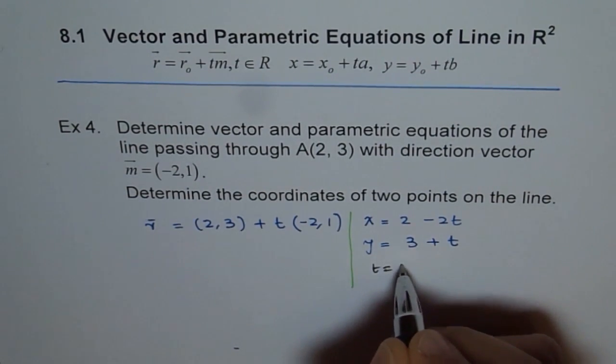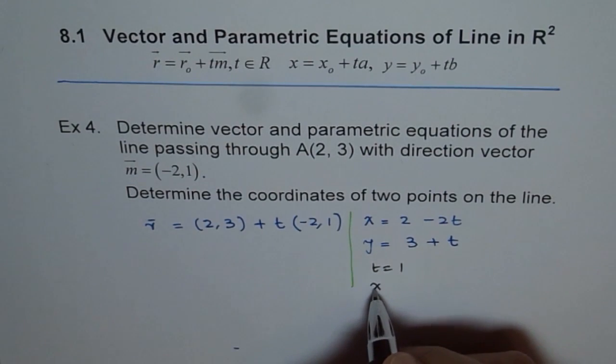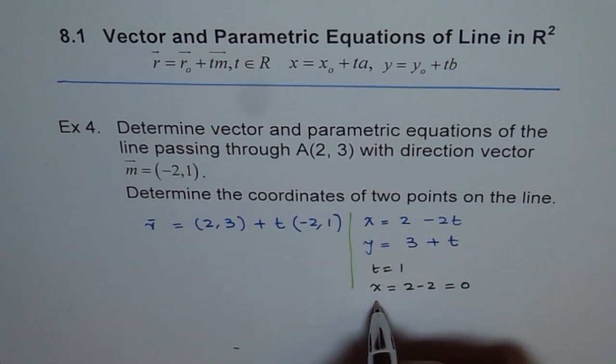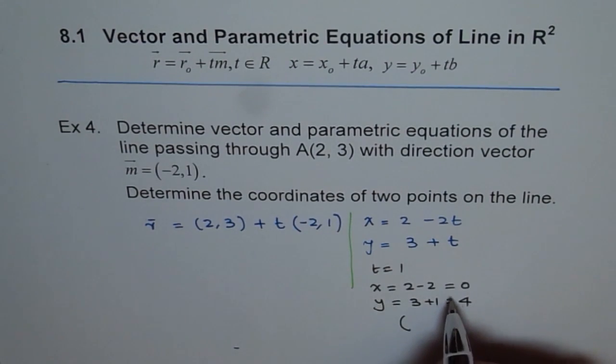We get X equals 2 minus 2, which is 0, and Y equals 3 plus 1, which is 4. Therefore, this coordinate is (0,4). So this point lies on our line.